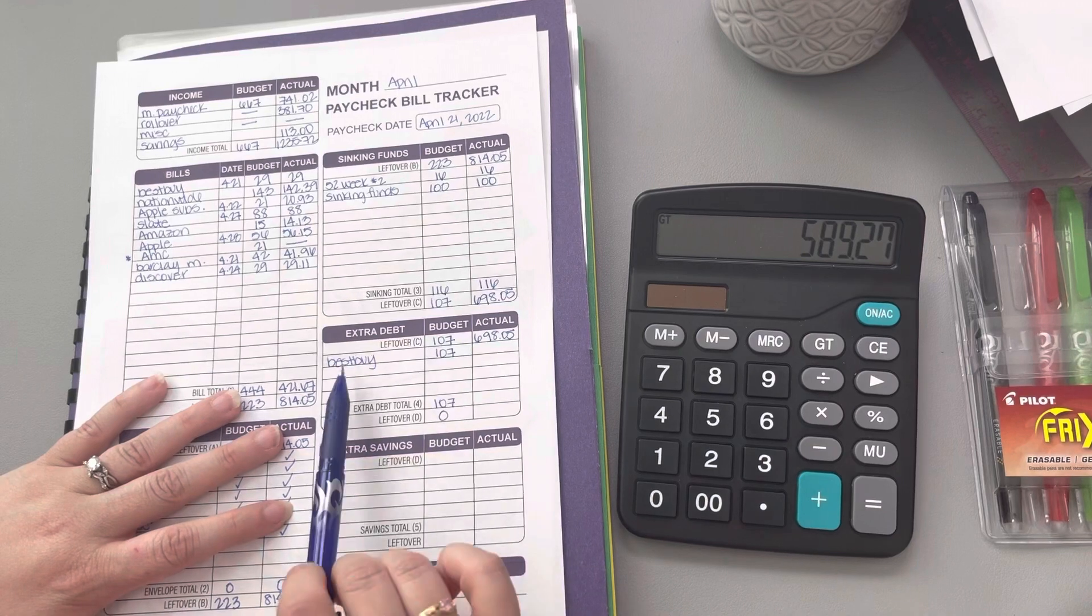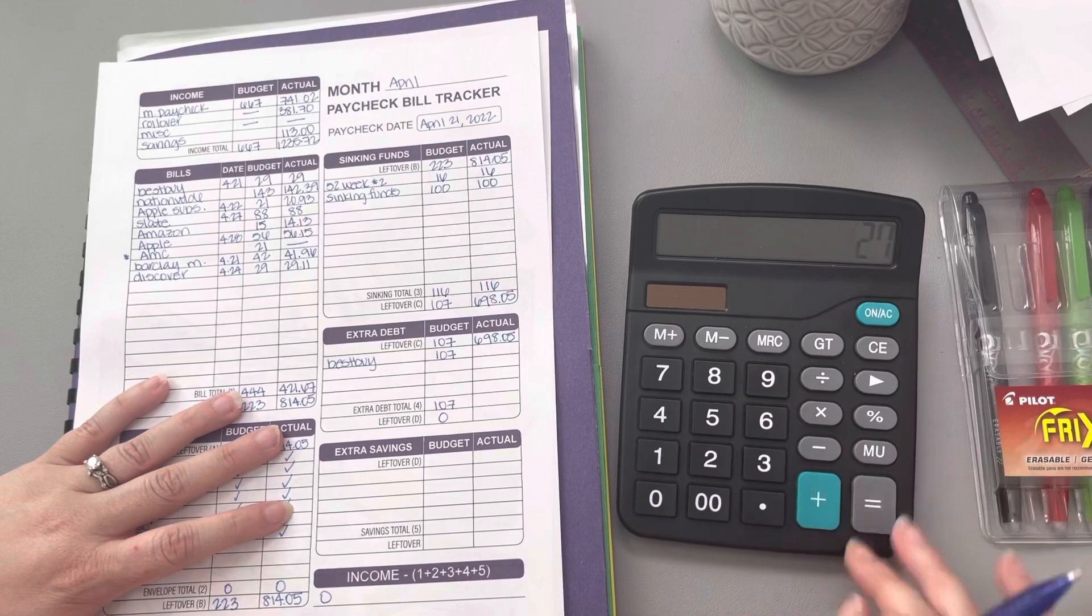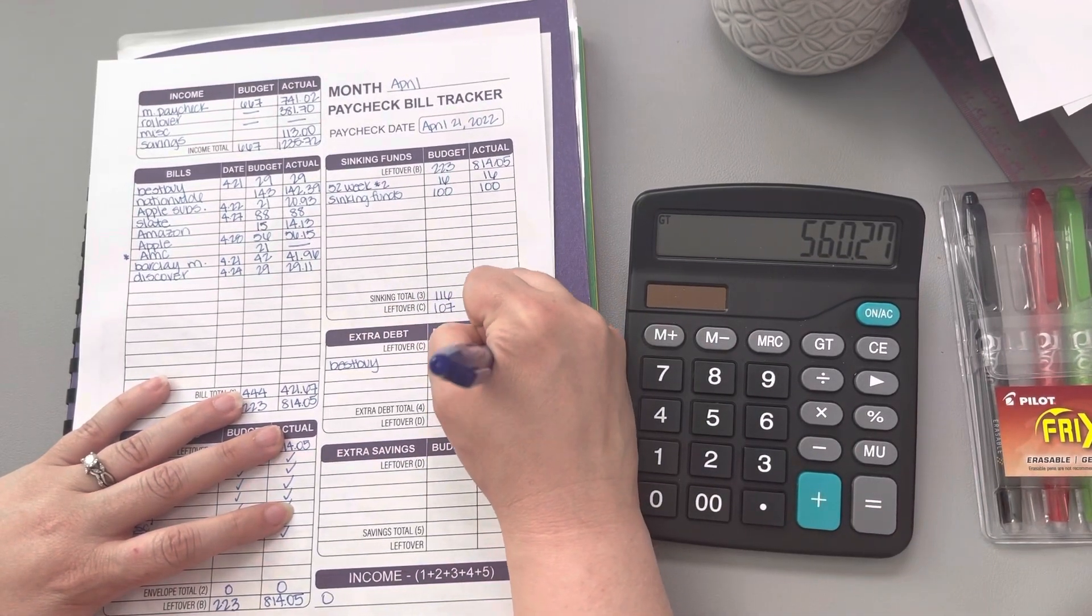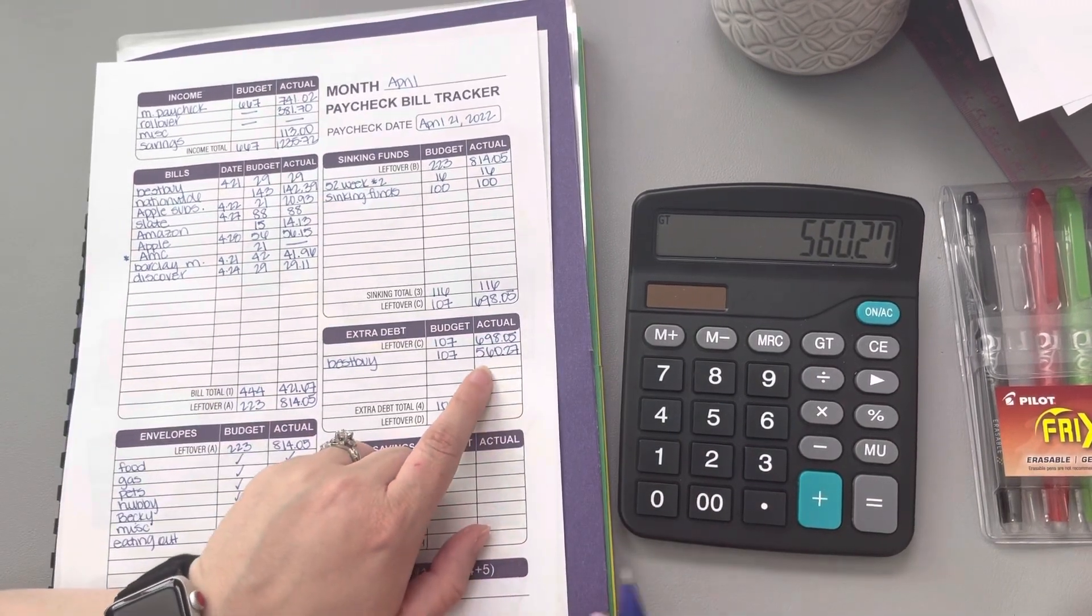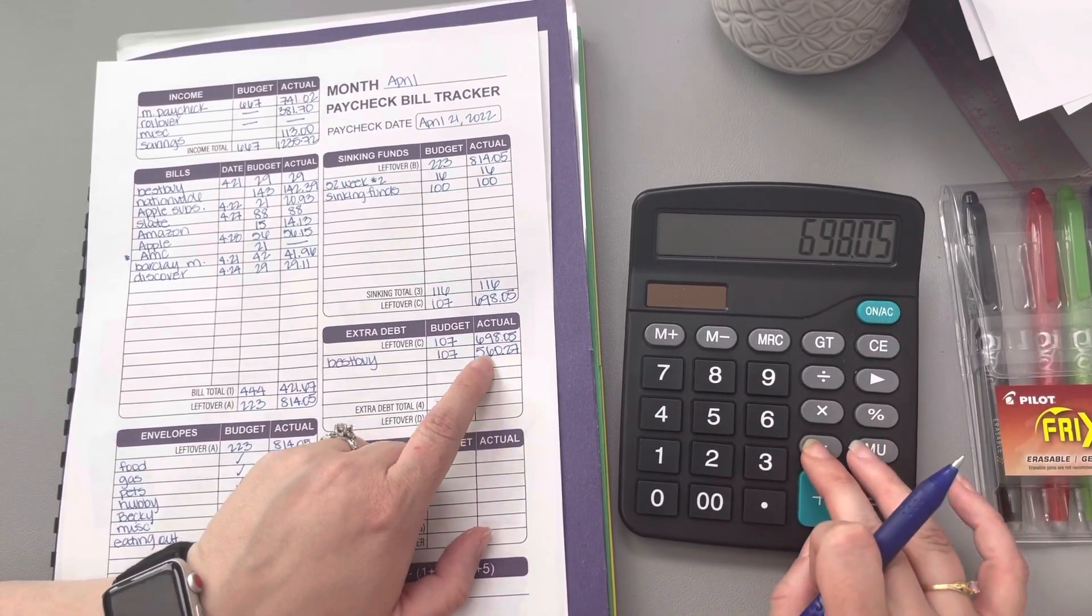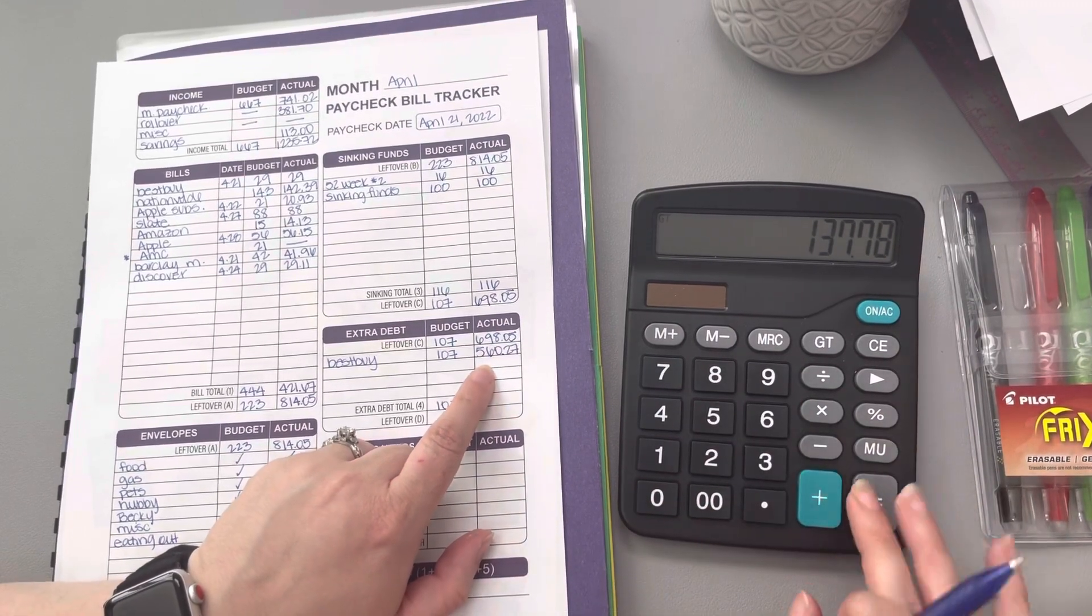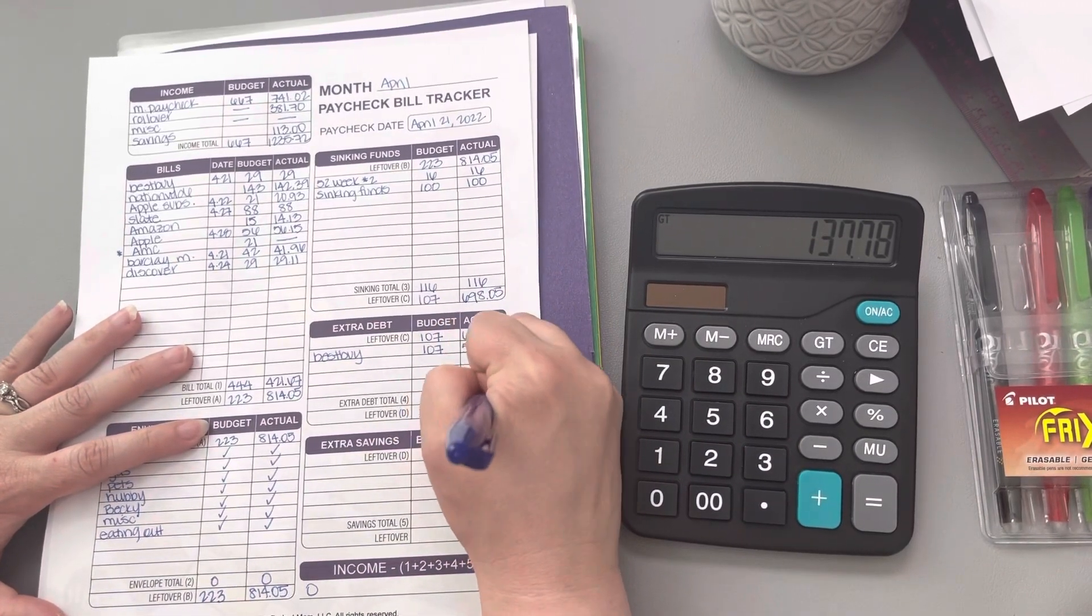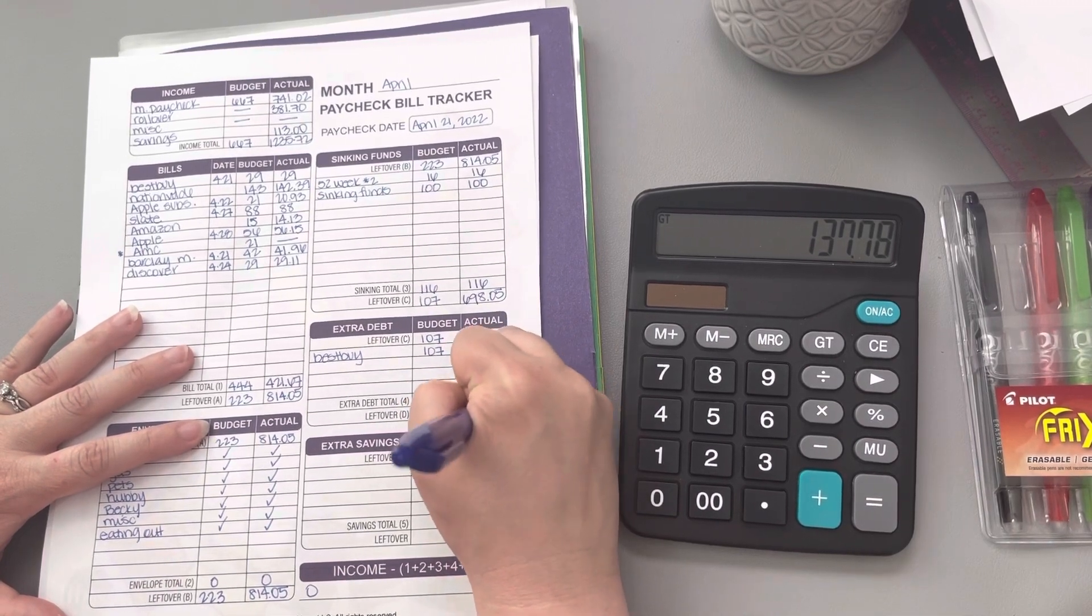So yes folks, Best Buy has been paid off this month. Let me go ahead and take that $29 out. We ended up putting $560.27 on there to pay it off. When I take our leftover minus the $560.27 that we paid, that leaves us with $137.78.